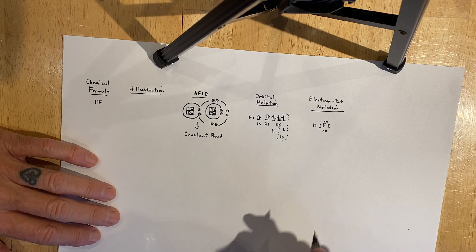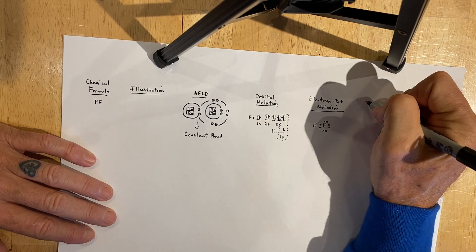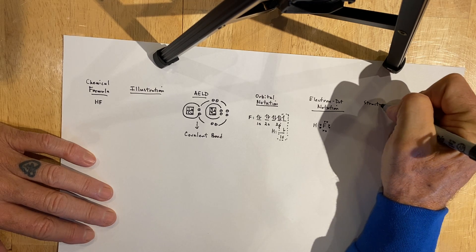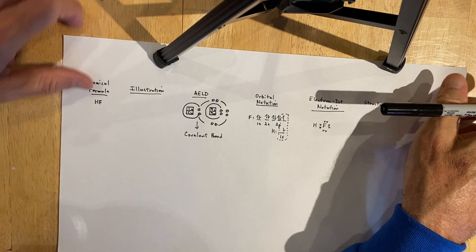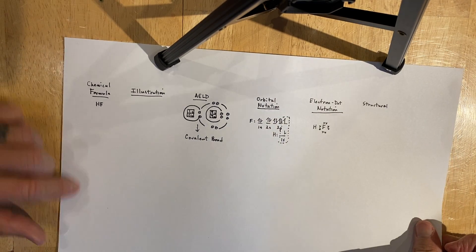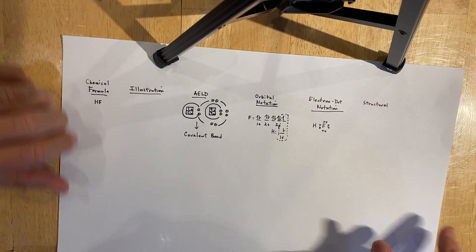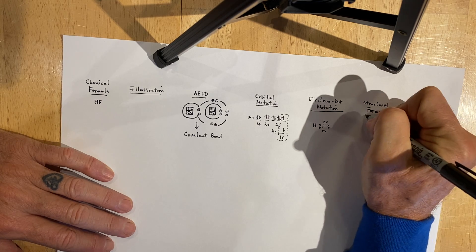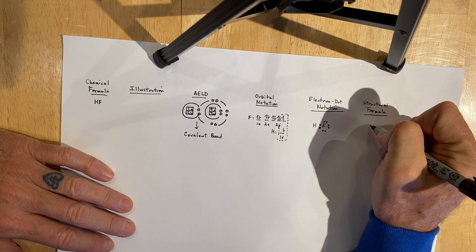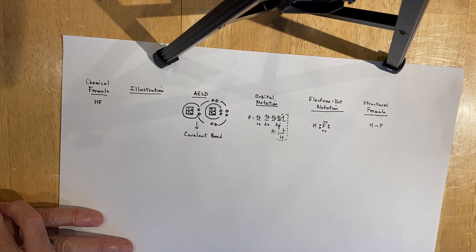The next diagram we're going to represent is the structural formula. We're going to flatten that out. The structural formula is a very simple representation in which we use a line to represent the shared pair of electrons between hydrogen and fluorine.